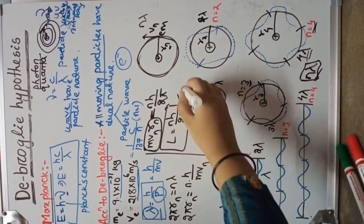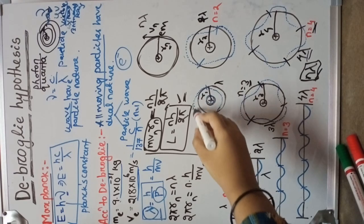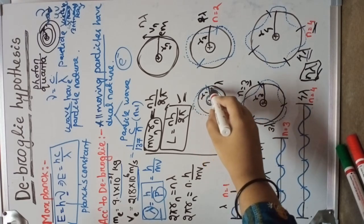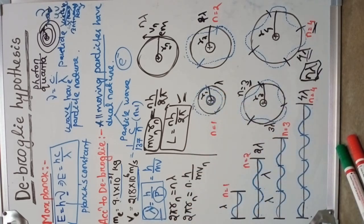This is the second postulate of Bohr's atomic model — that the angular momentum of an electron is equal to an integral multiple of h by 2 pi. The same assumption occurs here. In Bohr's atomic model, they proposed that the electron revolves around the nucleus in a particular circular path. But the actual electron revolves around the nucleus and also moves like a wave.